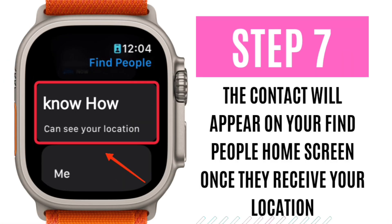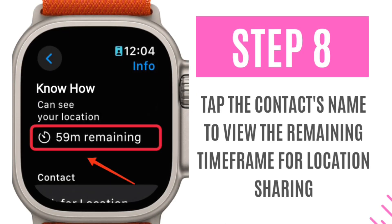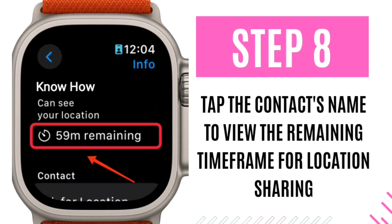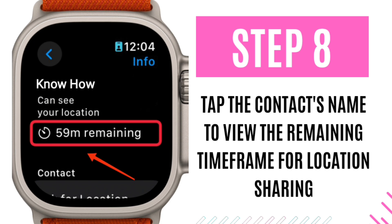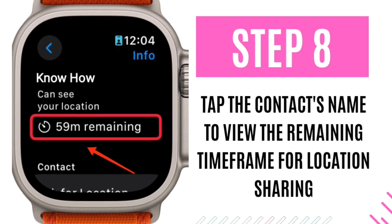Step 7: The contact will appear on your Find People home screen once they receive your location. Step 8: Tap the contact's name to view the remaining timeframe for location sharing.